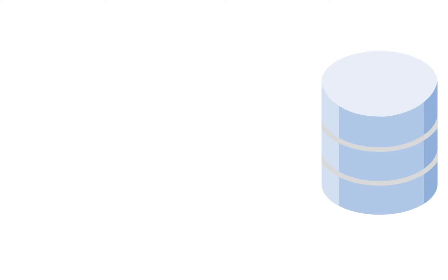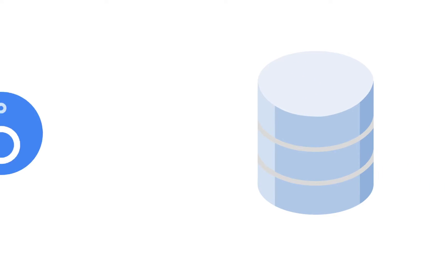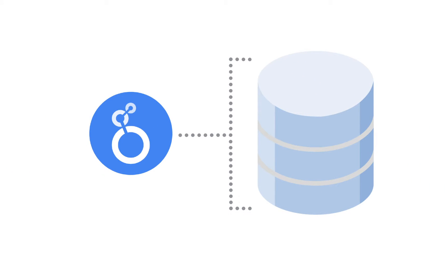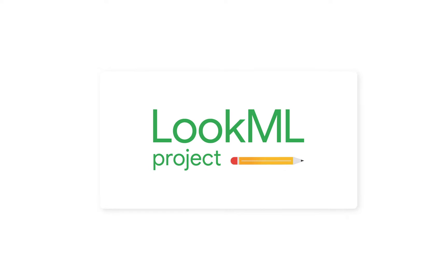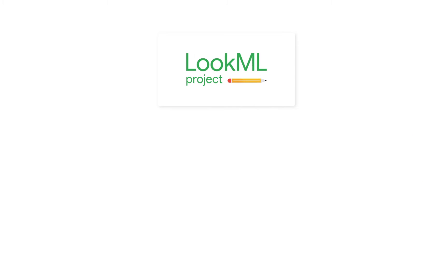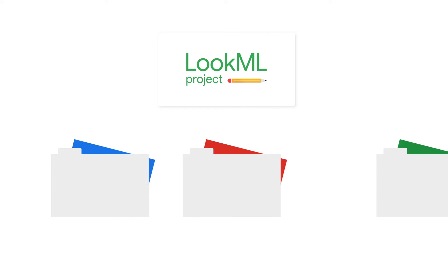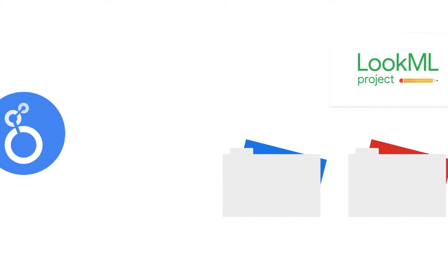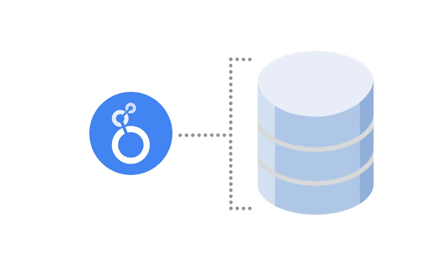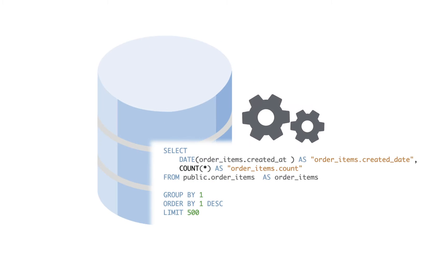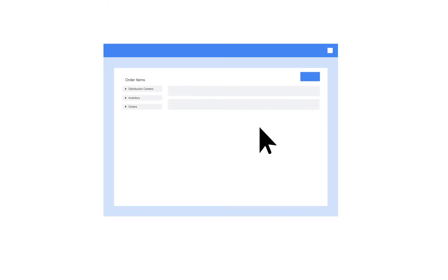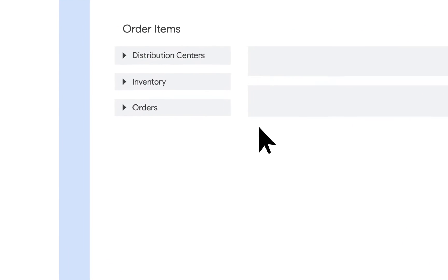Once your database has been connected to Looker, the next step is to create a new LookML project. A project is a collection of files that tell Looker how to connect to your database, how to query your data, and how to control the user interface's behavior.